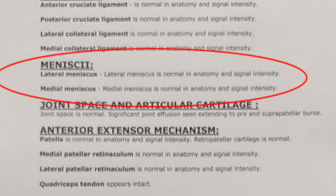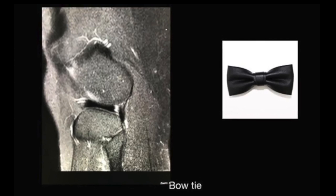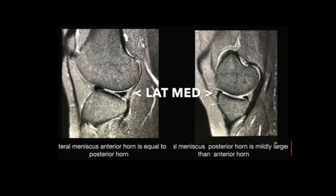Next in the format come the menisci. When we evaluate the meniscus, we discuss the shape, any abnormal signal intensity reaching the articular surfaces. The shape of the menisci typically in sagittal sequences shows a bow-tie appearance, and as we go along, the two triangular-shaped horns appear. We look at the free edge of the horns, the tibial articular surface, and the femoral articular surface. We look for signal changes where we can classify meniscal tears.